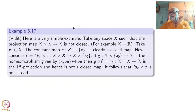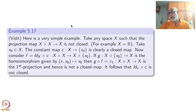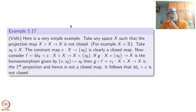An arbitrary closed map need not be universally closed. If you have a non-compact space, the projection map will not be closed. Here is a very simple example — attributed to a student named Vidit who came up with this idea.